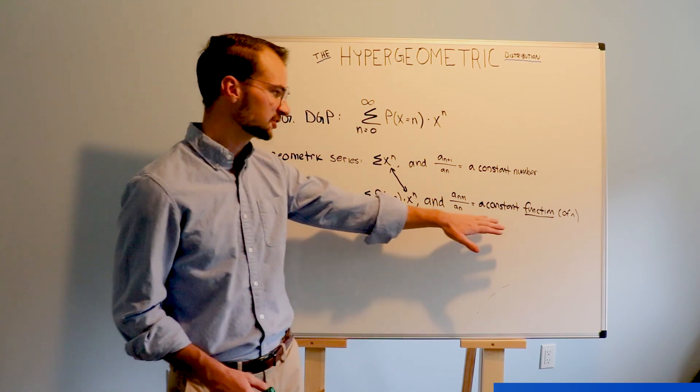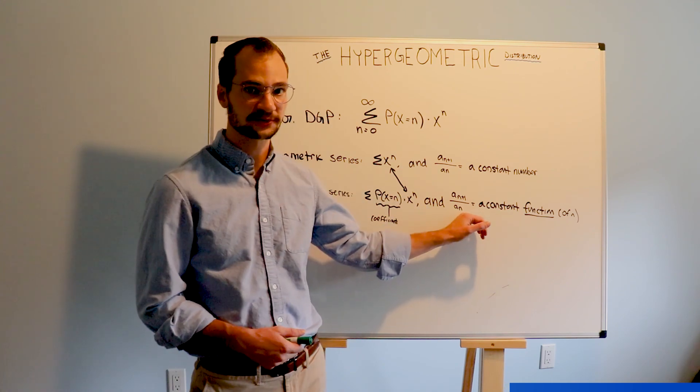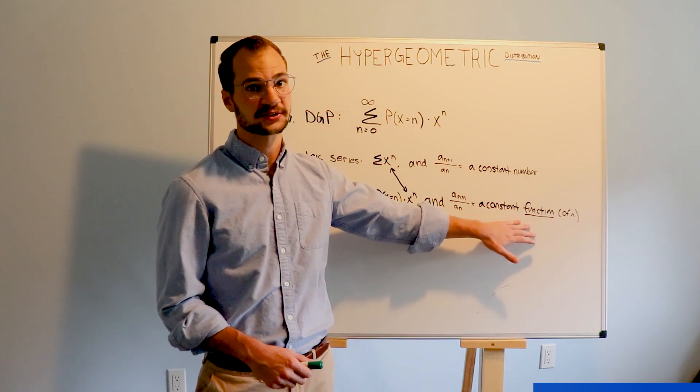And it turns out, algebraically, this coefficient makes it so that the ratio of sequential numbers is not a constant number, but a constant function.